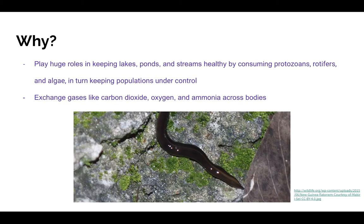The ability for flatworms to reproduce in several asexual and sexual ways is extremely important, since flatworms play huge roles in keeping lakes, ponds, and streams healthy by consuming protozoans, rotifers, and algae, in turn keeping populations under control. Also, through their large surface area compared to their volume, they can exchange gases like carbon dioxide, oxygen, and ammonia across their bodies. Since flatworms are greatly beneficial to the environment, it is quite useful for them to be able to reproduce and create more of themselves when need be. The image shows a flatworm feasting on moss and algae on the surface of a rock.